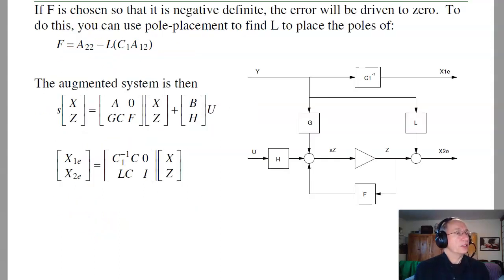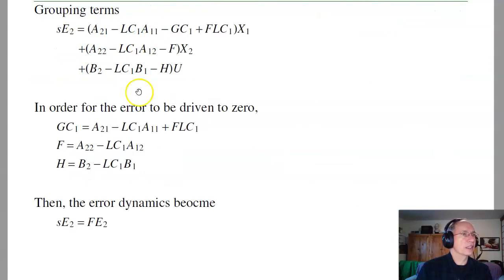If I choose f to be negative definite, meaning it's stable, then the error e2 is going to be driven to zero. At that point, x2 estimate equals x2. So what I'll do is I've got this matrix L. Choose L so that this matrix is negative definite or stable. Once I choose L, that defines f. Once I choose L, that determines h. Once I know L and f, I know g.